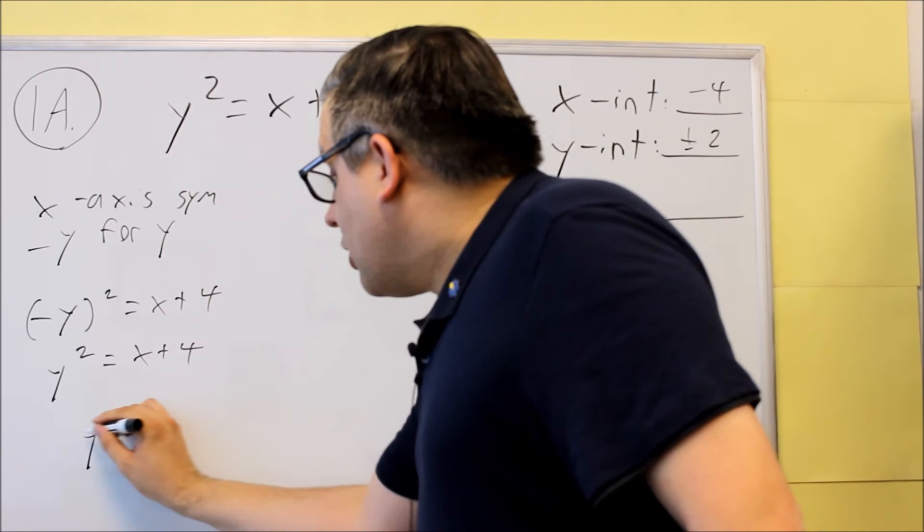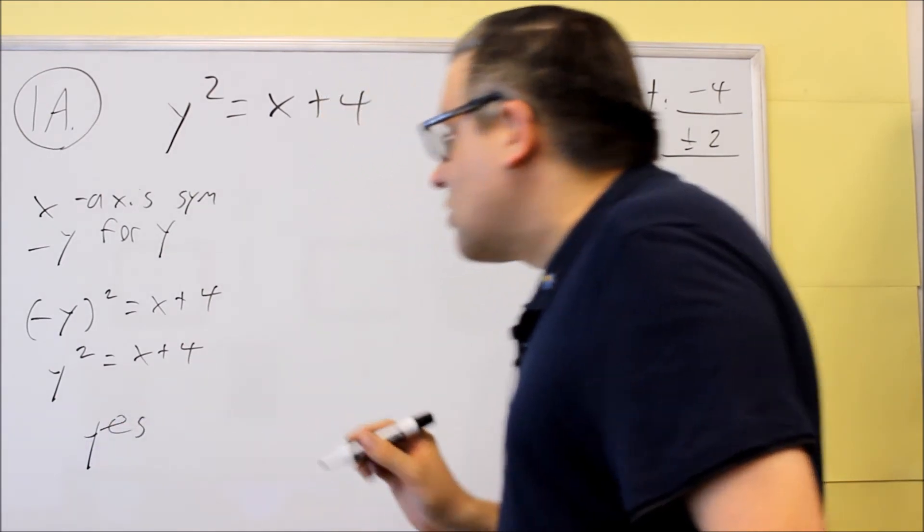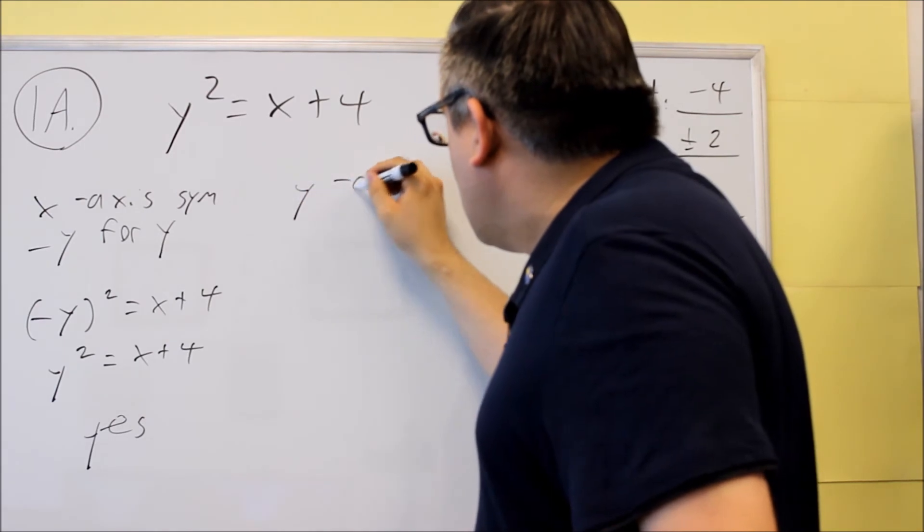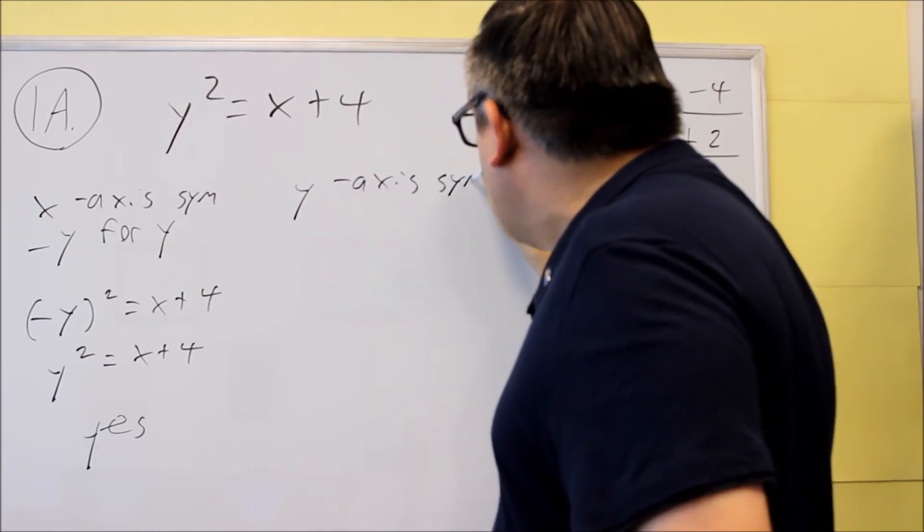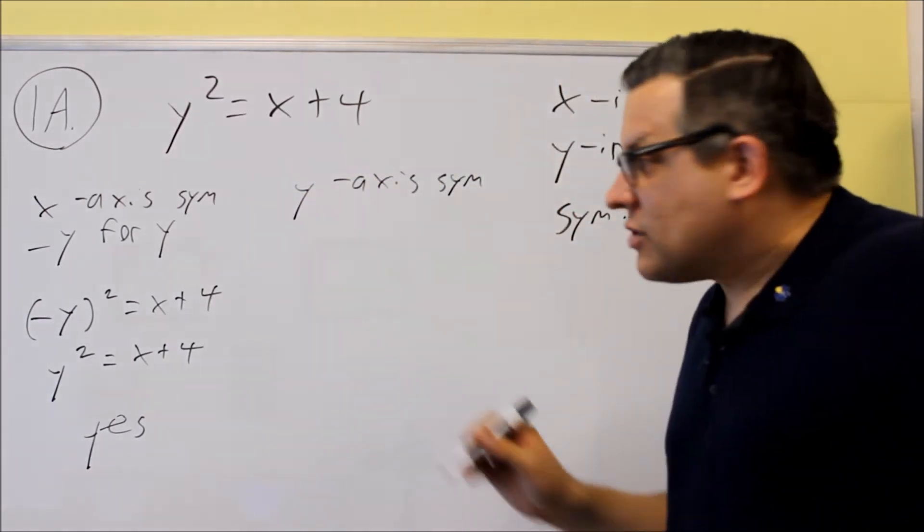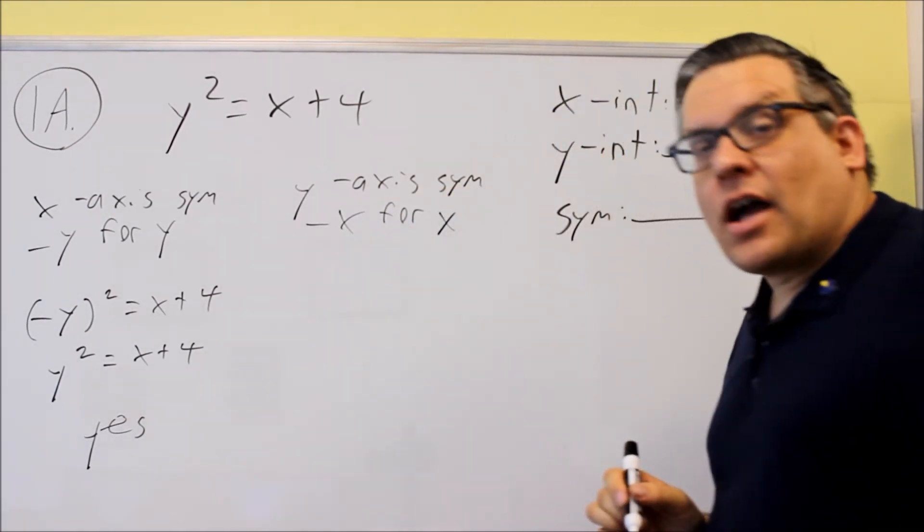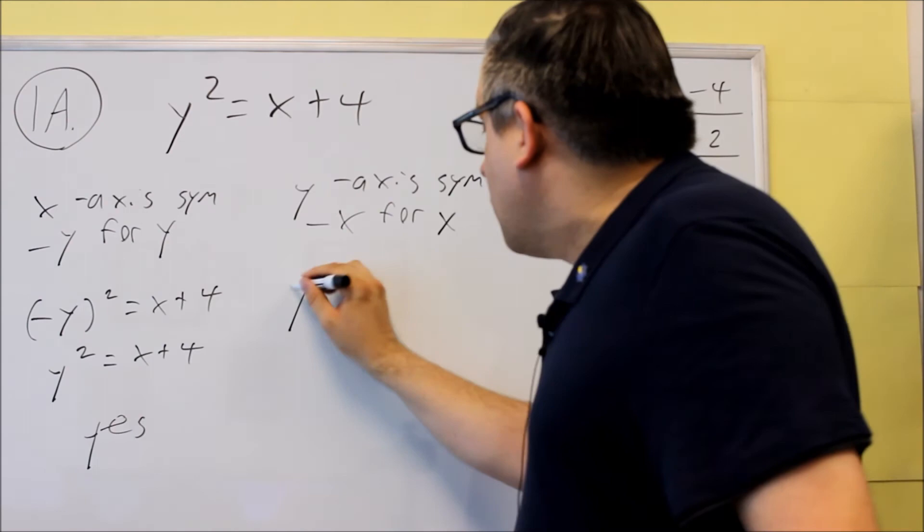Next, we're going to do the y-axis symmetry. So y-axis symmetry, you put negative x for x. So we'll put that in the original one, y squared equals negative x plus 4.